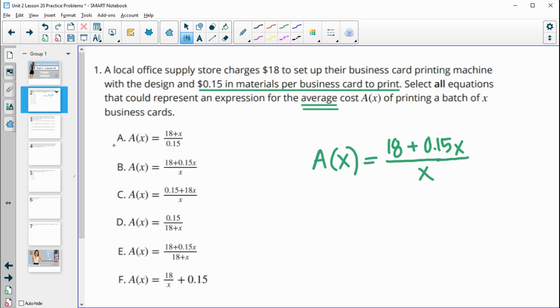So we can see in part A, that would not be true. Part B is the exact equation that I wrote, so that one's good. Part C puts the variable with the 18, not with the 15 cents, so that's wrong.